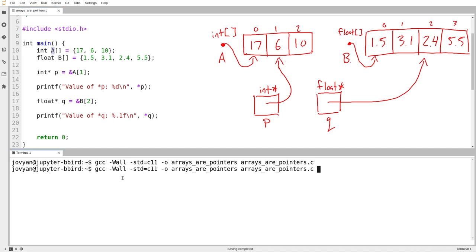So I've got some code here. Let's try running it just before we do anything else. It prints out value of star P is 6. Value of star Q is 2.4. Okay, great.